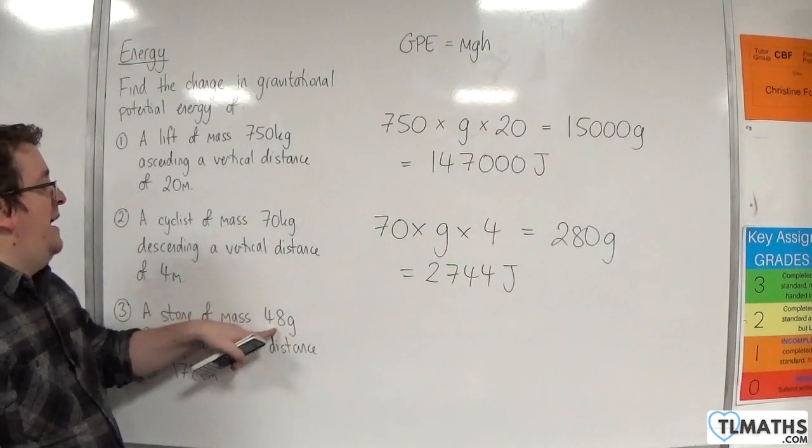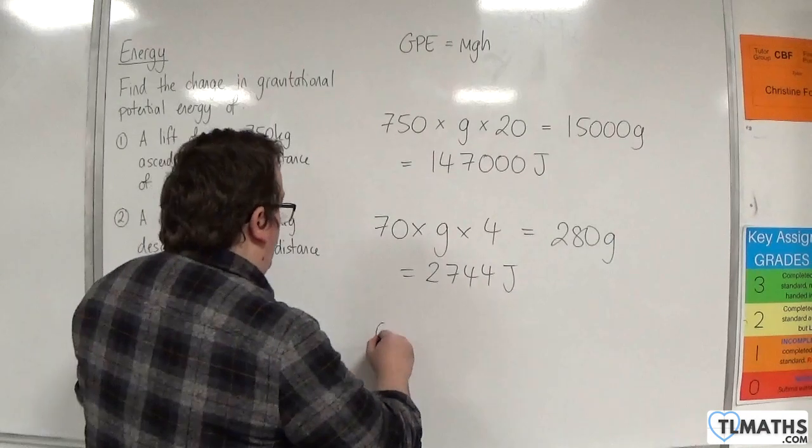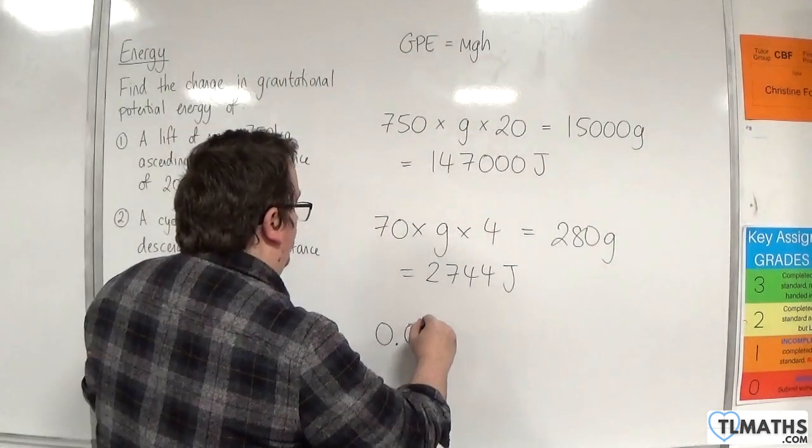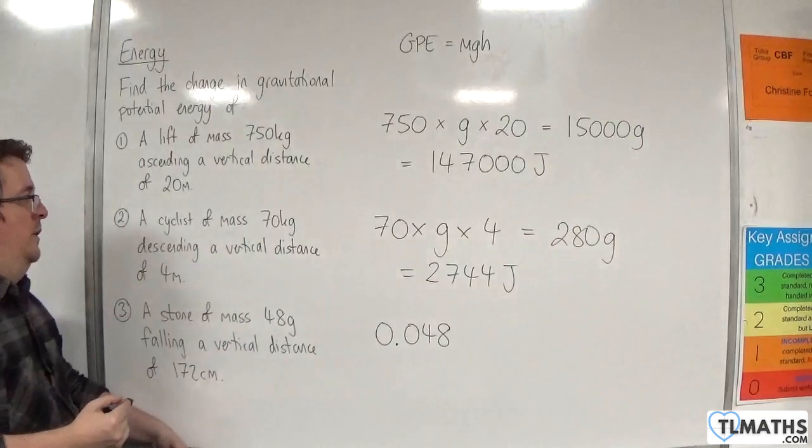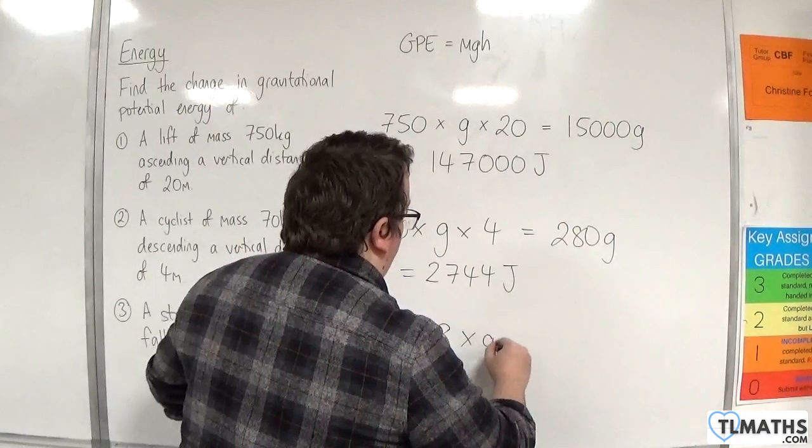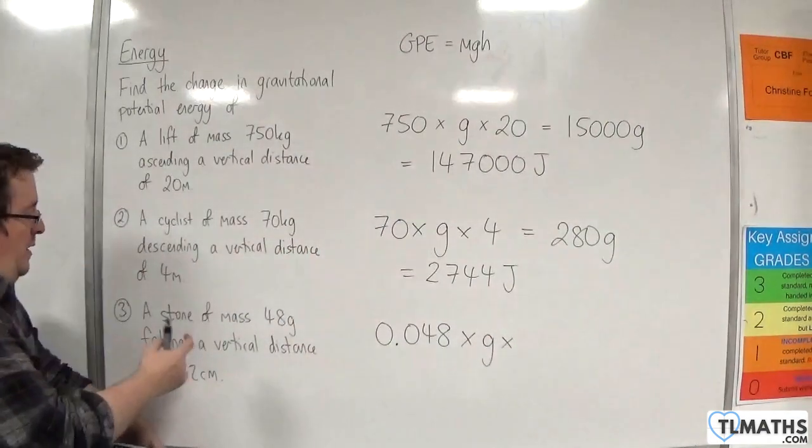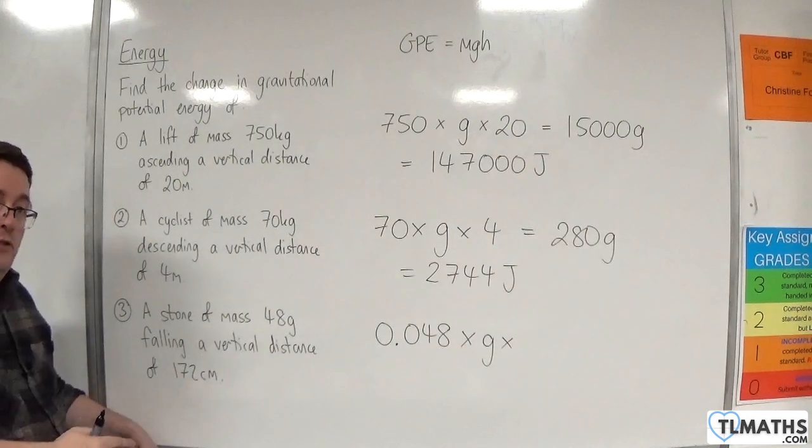So we have 48 grams, which is 0.048 kilos, times by G, times by H, which is 1.72 meters.